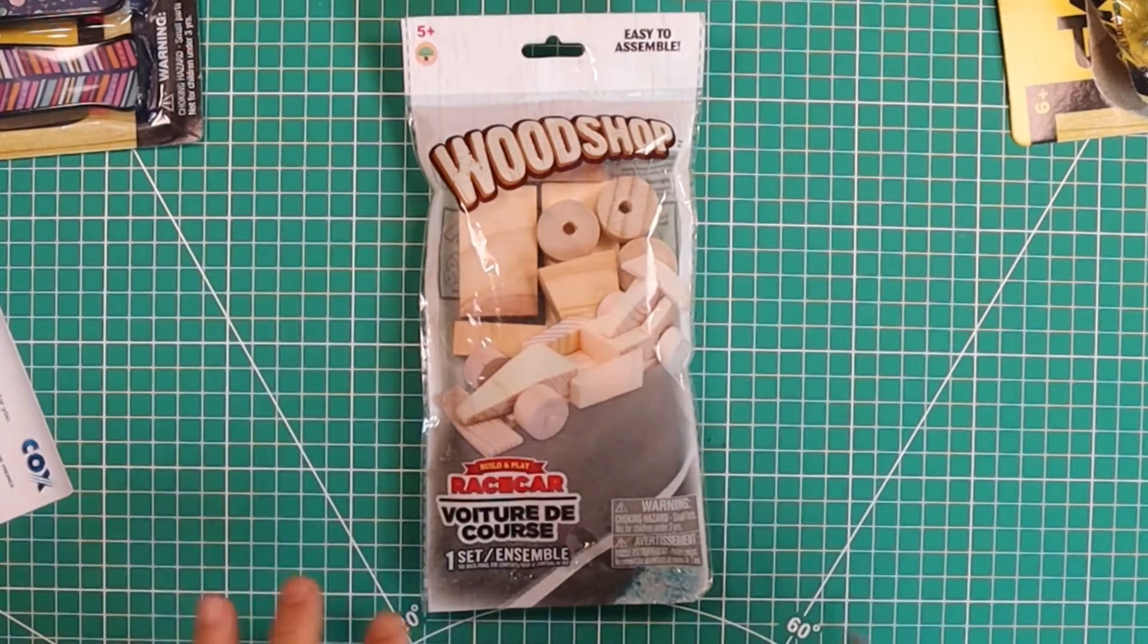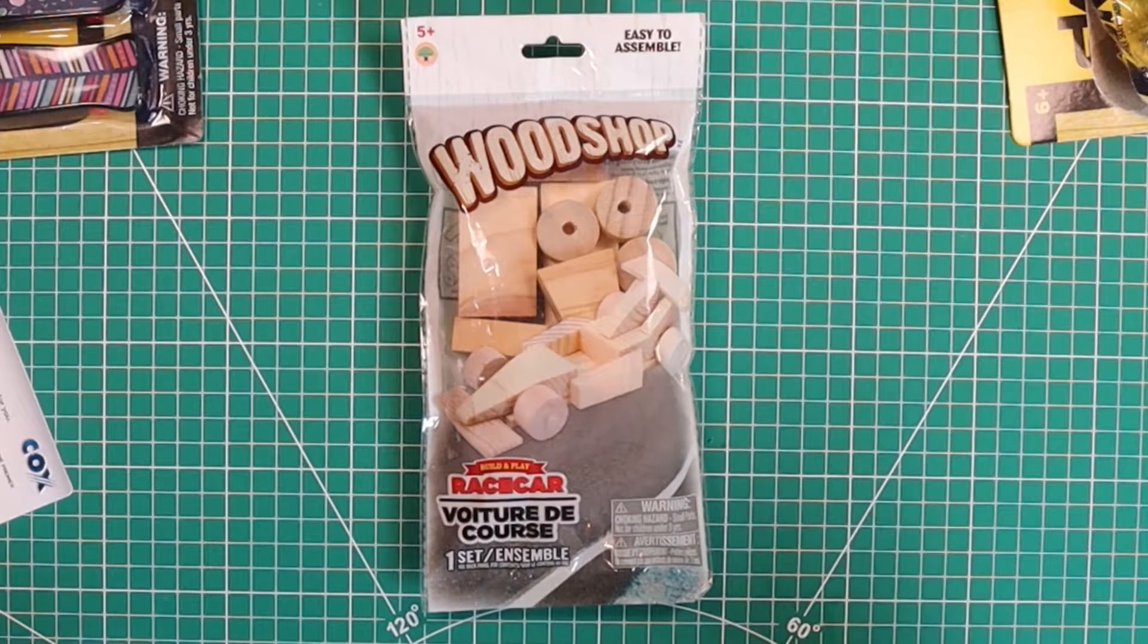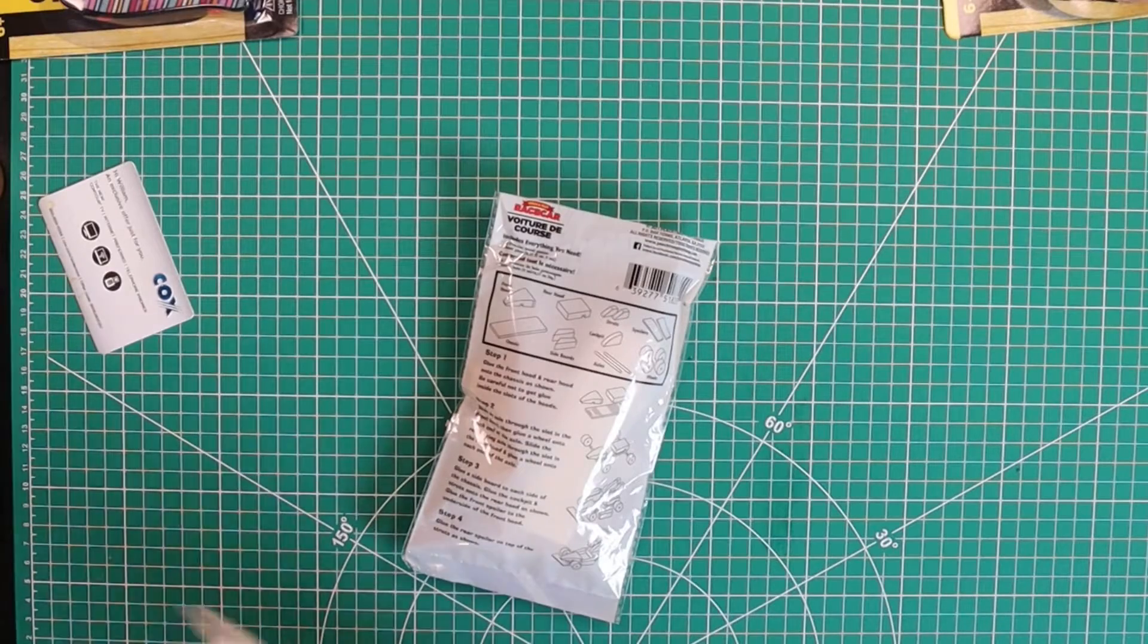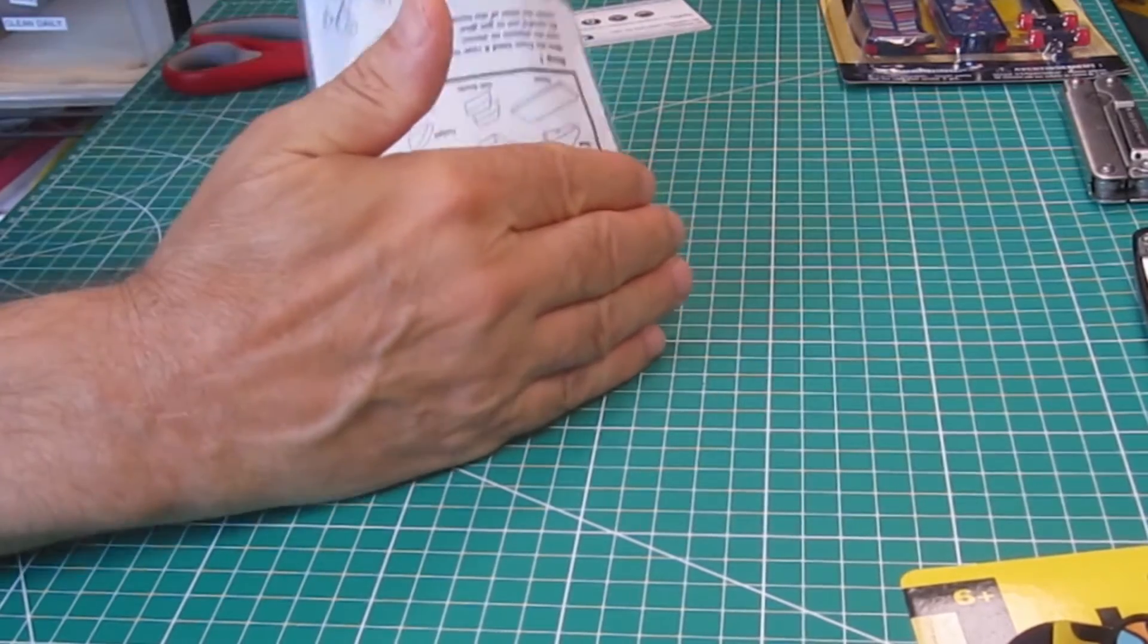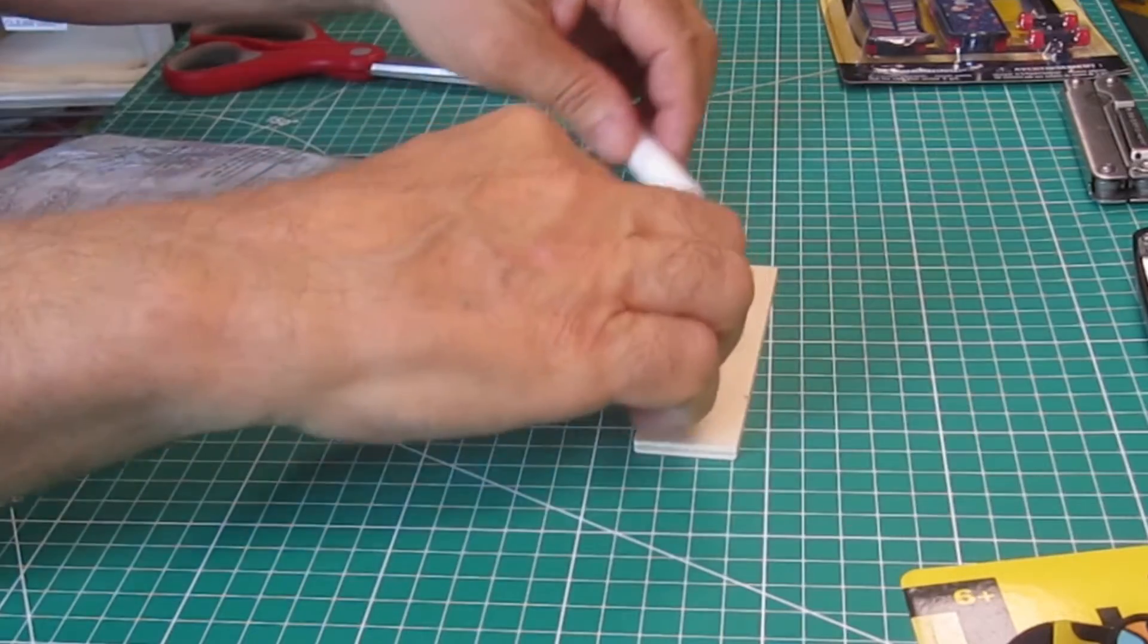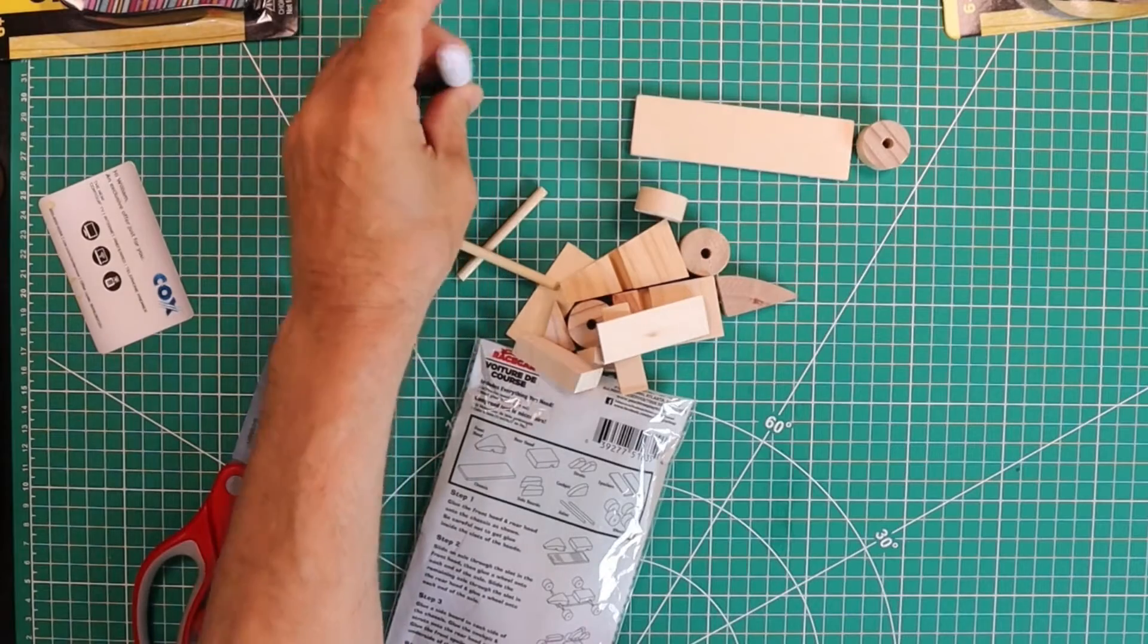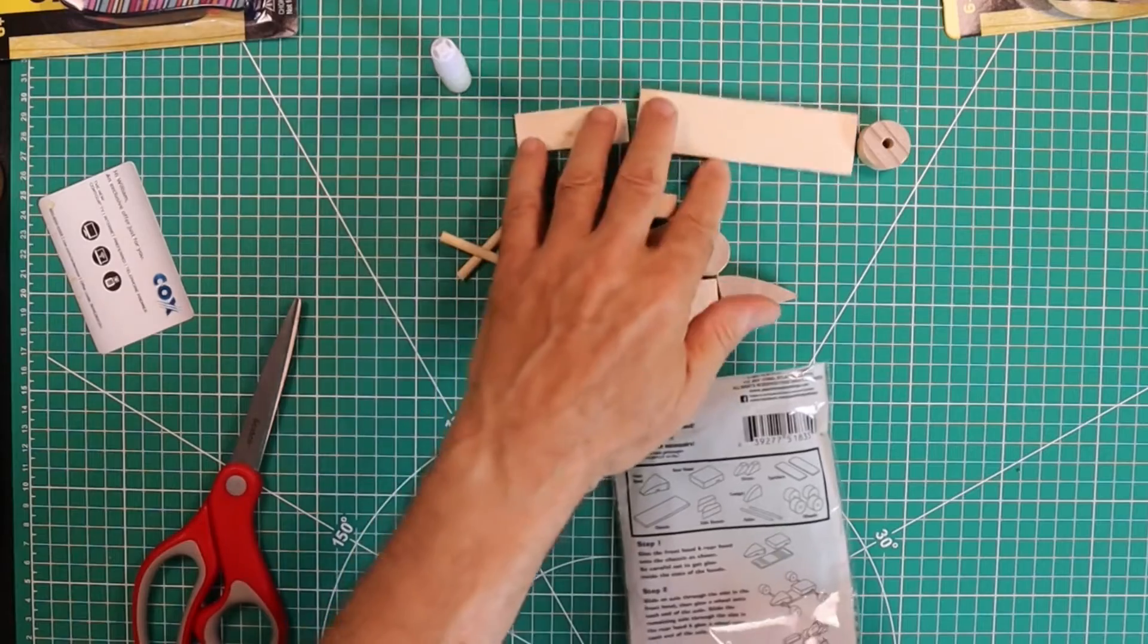And time to look at the woodshop race car which is what we're building today. This is gonna be fun. First we need to make sure that everything is in here. Ooh look at that. Here I thought that I'd have to go buy glue. It looks like they gave me glue. I could have done it for a dollar.